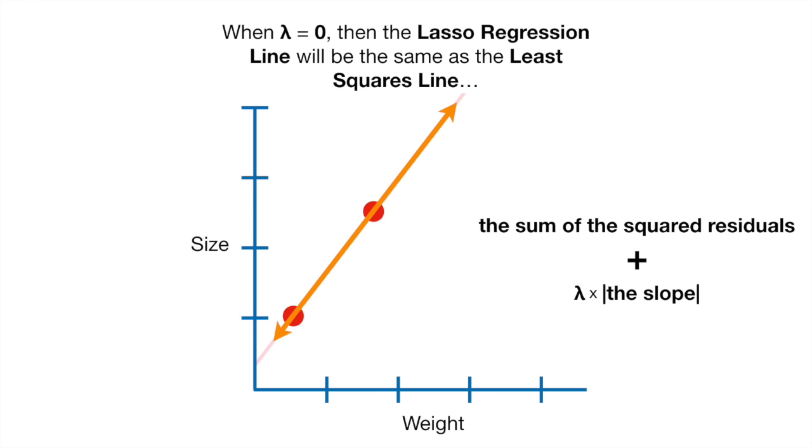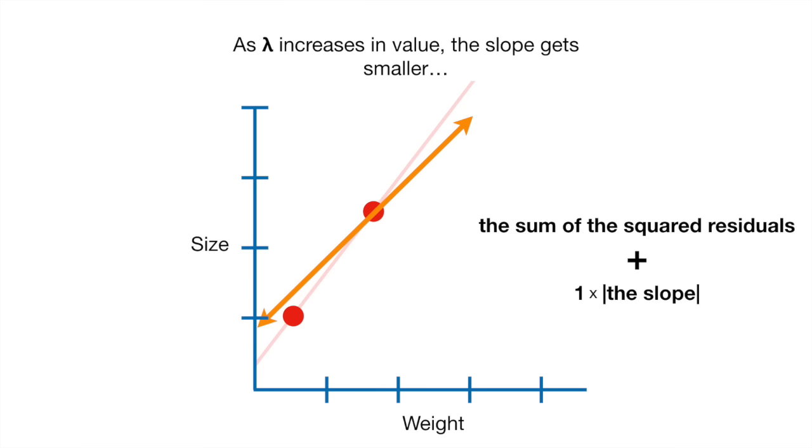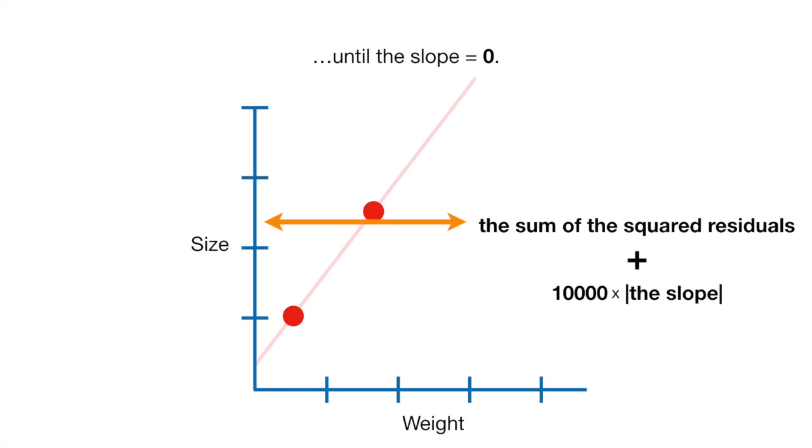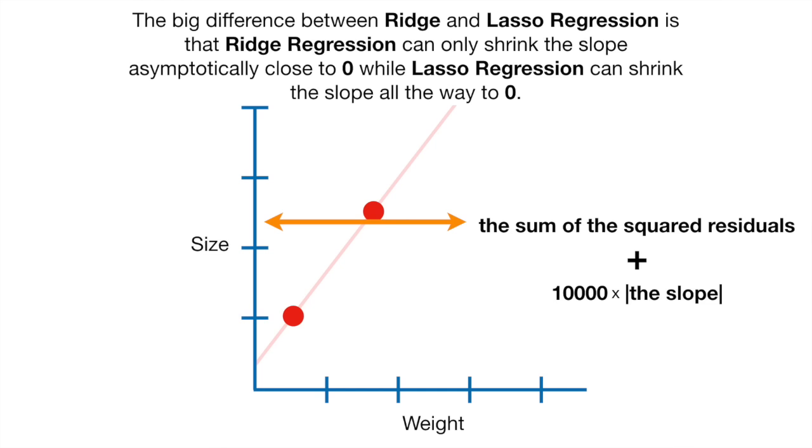When lambda equals zero, then the Lasso Regression line will be the same as the least squares line. As lambda increases in value, the slope gets smaller until the slope equals zero. BAM! The big difference between Ridge and Lasso Regression is that Ridge Regression can only shrink the slope asymptotically close to zero, while Lasso Regression can shrink the slope all the way to zero.